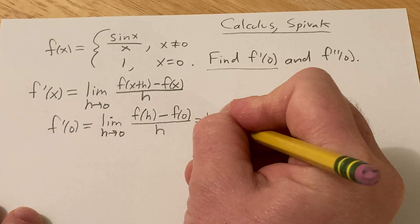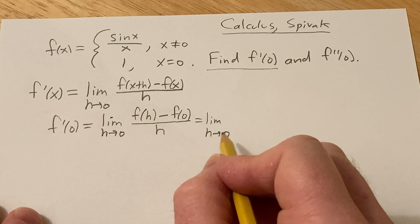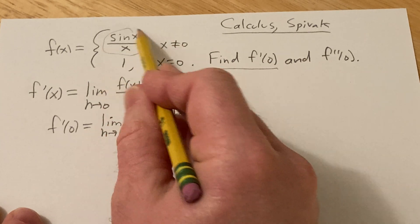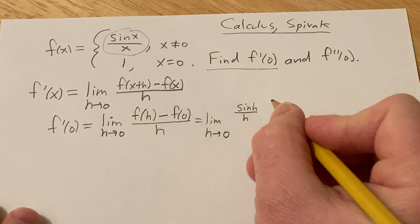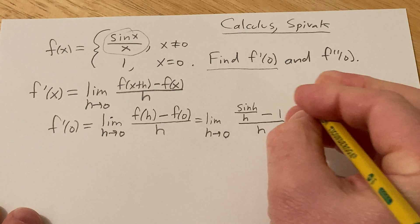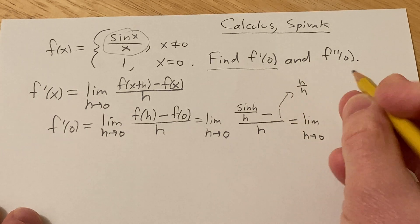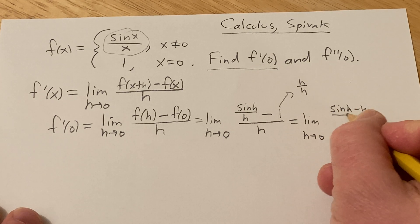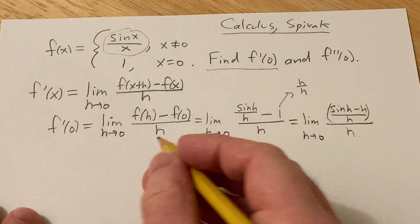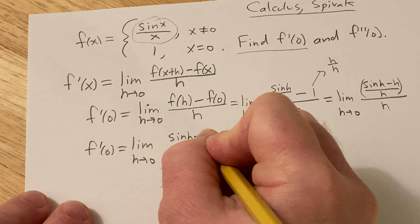This is equal to the limit as h approaches zero. Because we're taking a limit and h is approaching zero, h is actually not equal to zero. Recall from the definition of the limit, you just care about what happens when you're close to the point, not actually at the point. So h is not zero, and we use the non-zero piece for f of h. So we have sinh over h minus f of zero, which is one, all over h. Writing one as h over h, this becomes sinh minus h over h, all over h. So f prime of zero equals the limit as h approaches zero of sinh minus h over h squared.